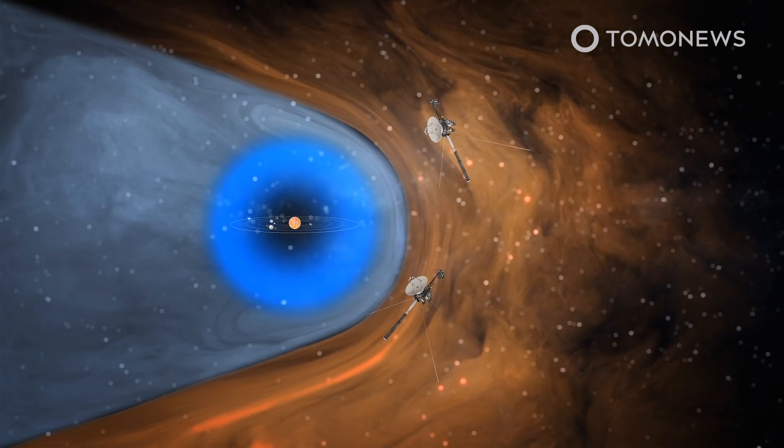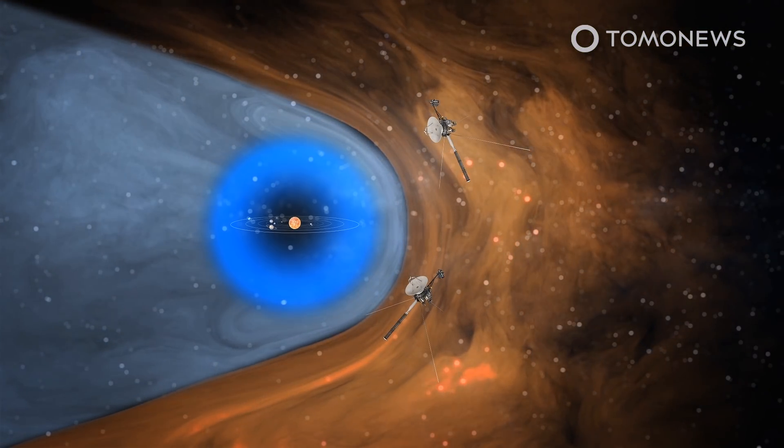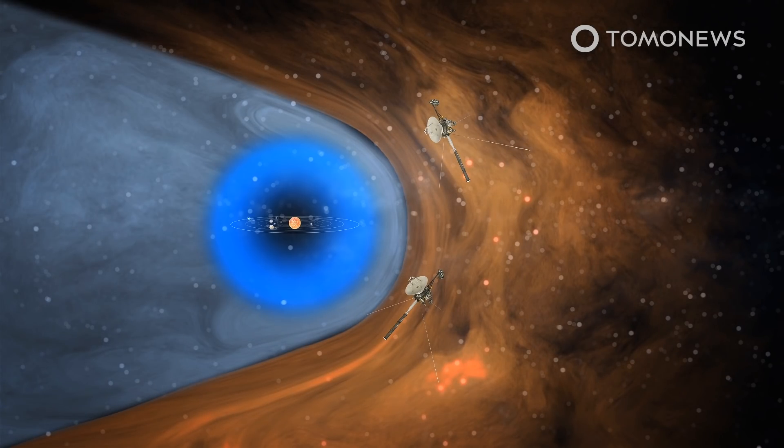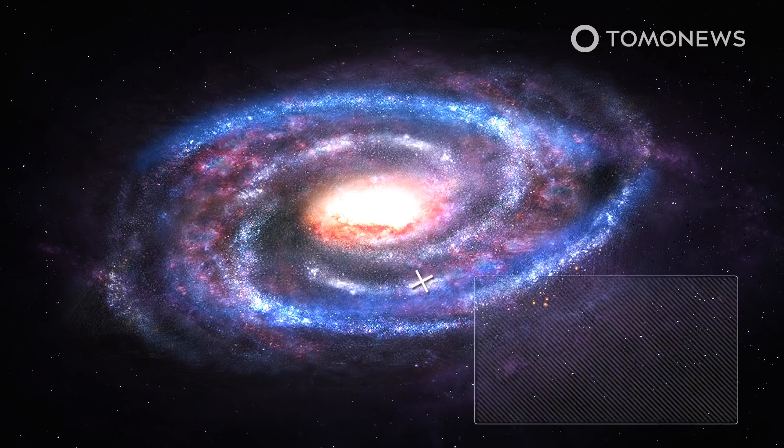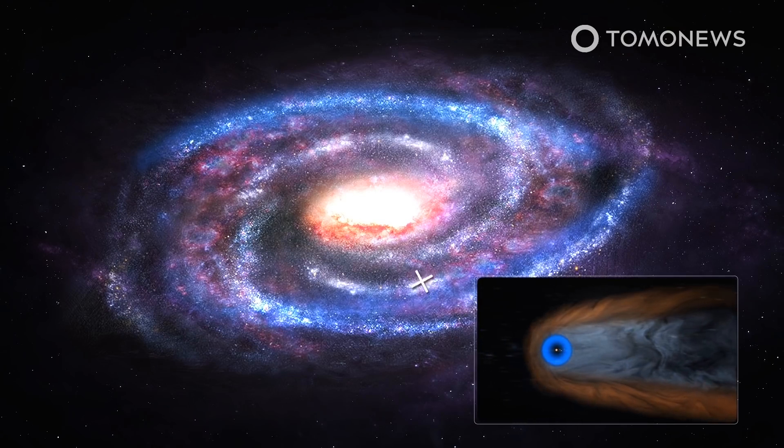Inside is the heliosphere, a huge bubble of the sun's magnetic influence made by the solar wind that extends far beyond Pluto. This bubble was thought to be shaped like a comet with a rounded leading edge and tail as it orbits the Milky Way.